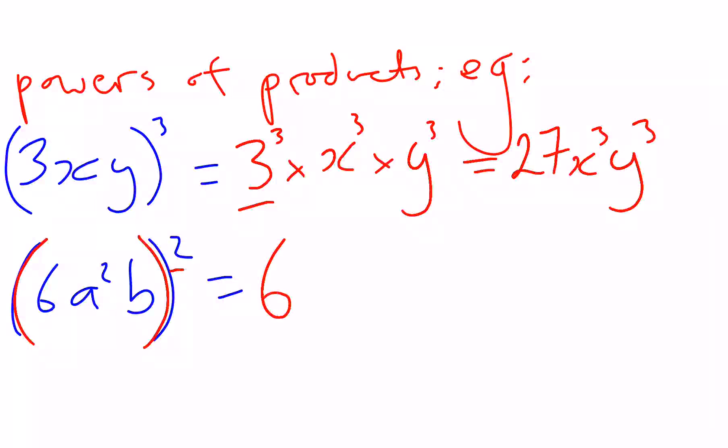So I need to do 6 squared times, now a is already squared, so a becomes to the power of 2 times 2, which is 4, times b. b had the power of 1, so it just keeps 1 times 2 is 2.